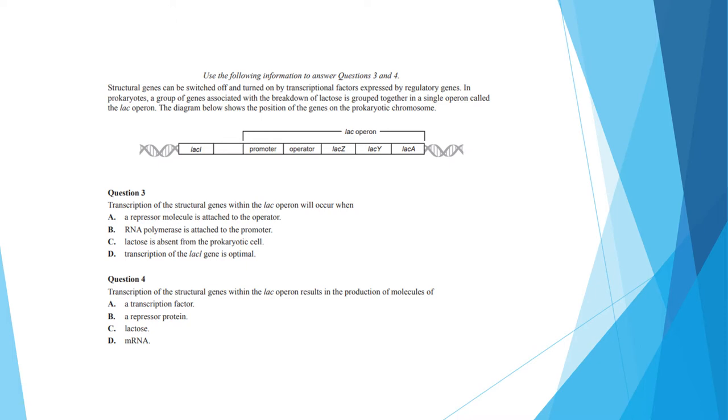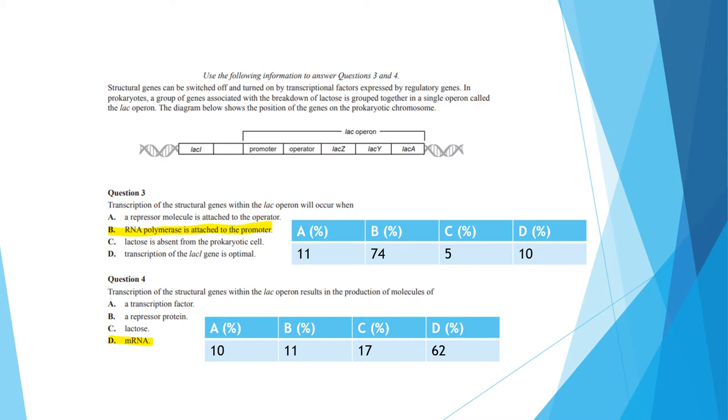The next two questions both require comprehension of the following information, so feel free to hit pause, read through the information, and then recommend when you have selected your answers. For question 3, transcription of the structural gene within the lac operon will occur when RNA polymerase is attached to the promoter. A repressor molecule will suppress the transcription of the sequence, so A is wrong. Given that the lac operon is associated with the breakdown of lactose, the absence of lactose within the cell is unlikely to trigger the gene's transcription. And although the lac gene appears to be proximal to the lac operon group, it is not the marked promoter region. So its transcription is not associated with the transcription of the lac operon complex.